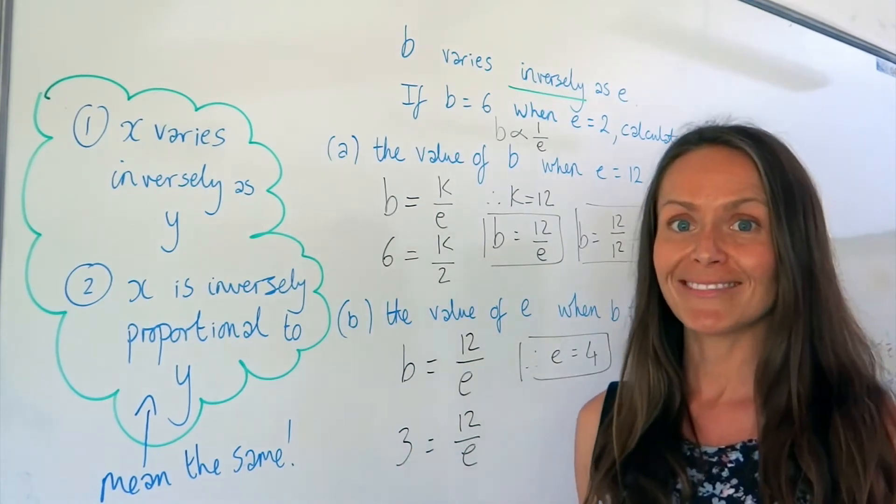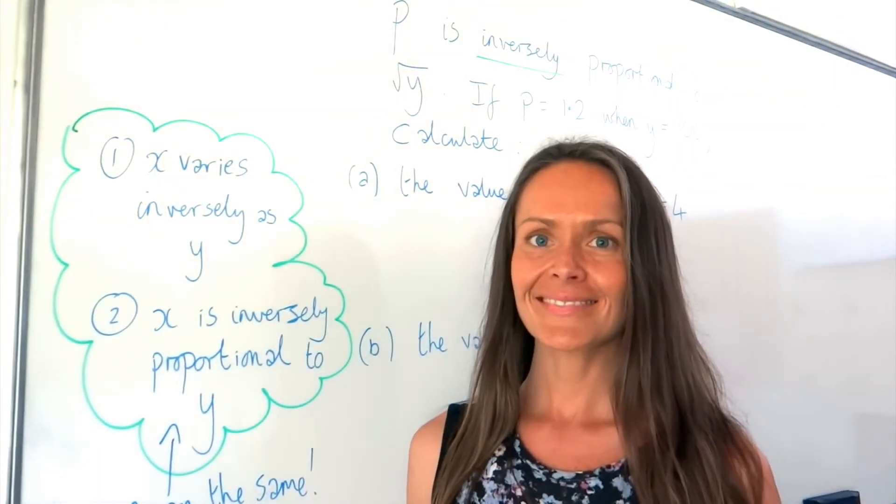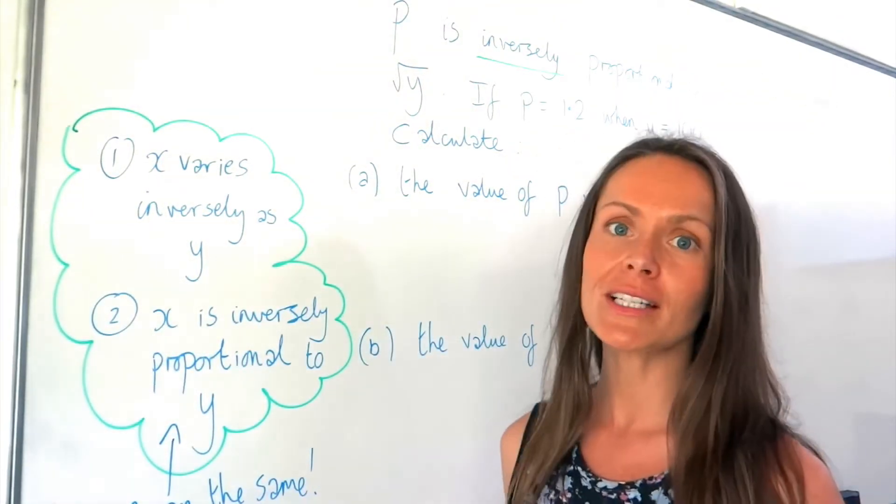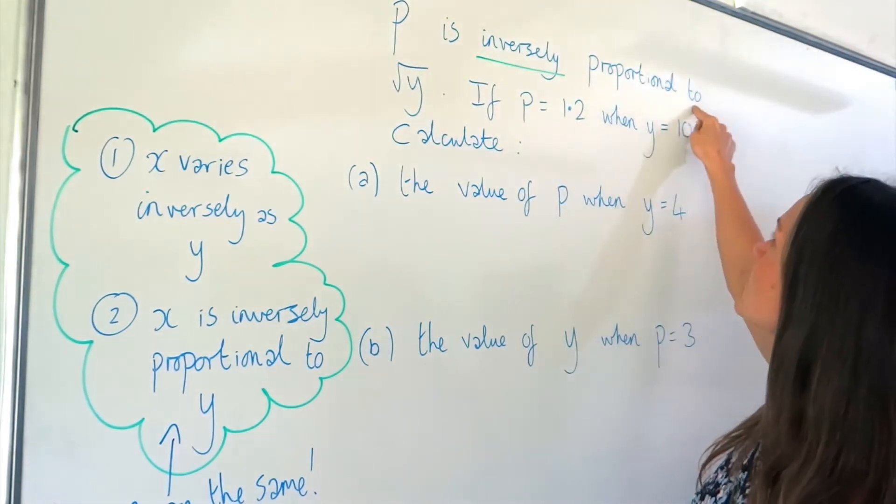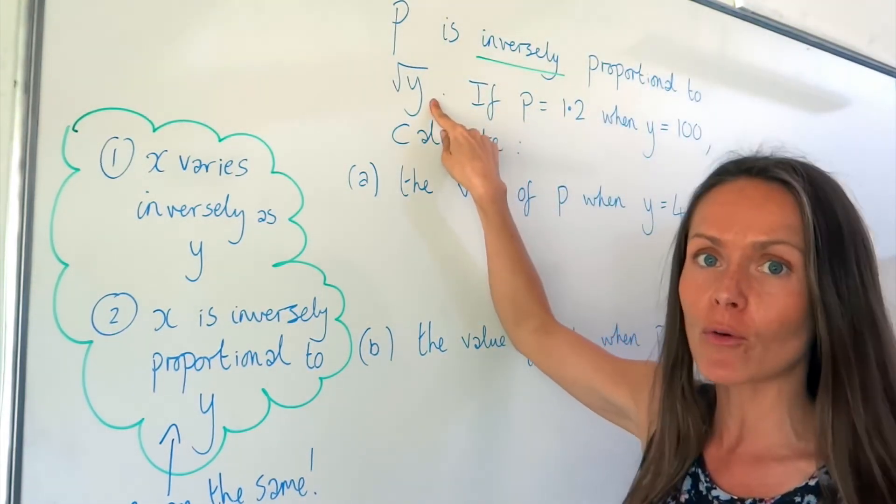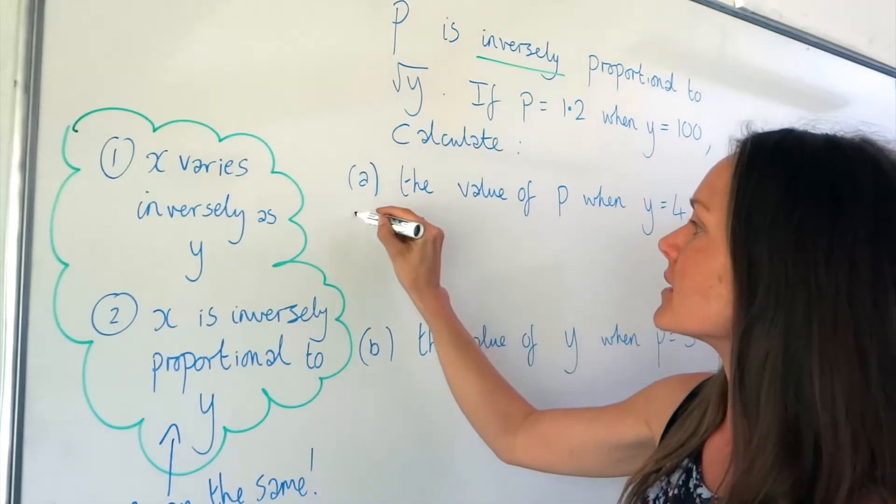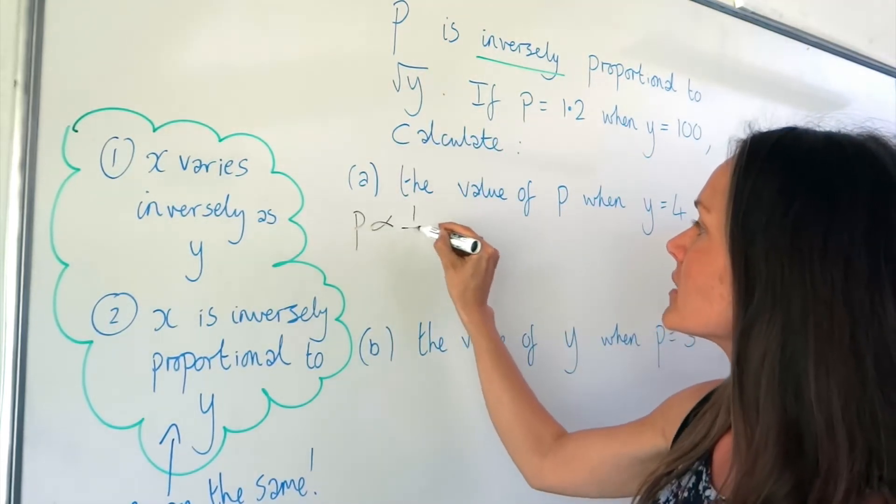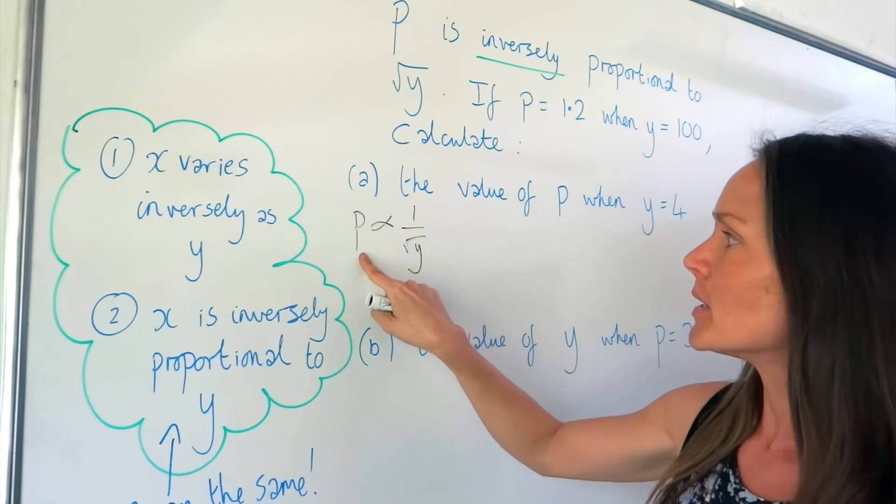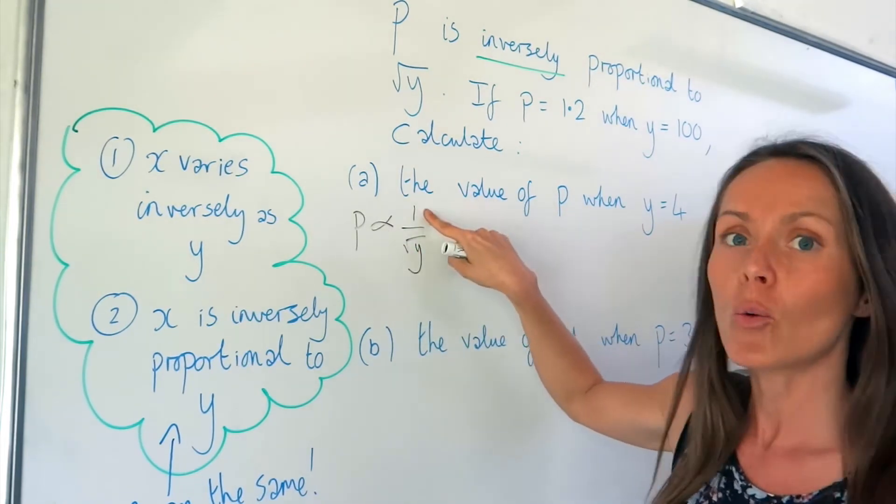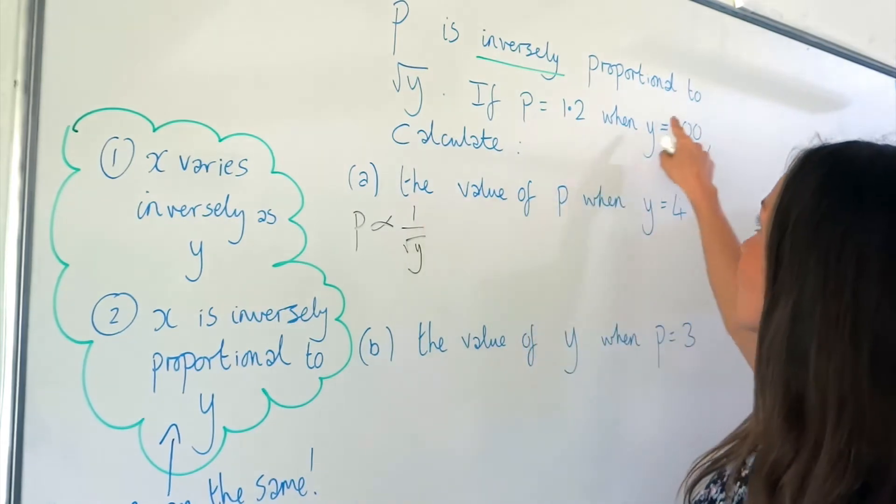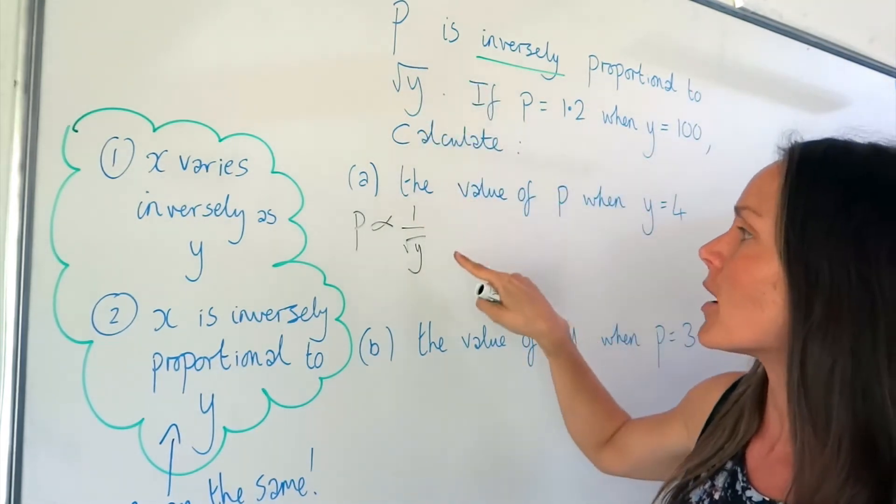On to the next example. So here's another inversely proportional question. P is inversely proportional to the square root of Y. So that means it will be written like this. P is inversely proportional to the square root of Y. Remember, 1 is the numerator. And the second part here, the square root of Y, is the denominator.